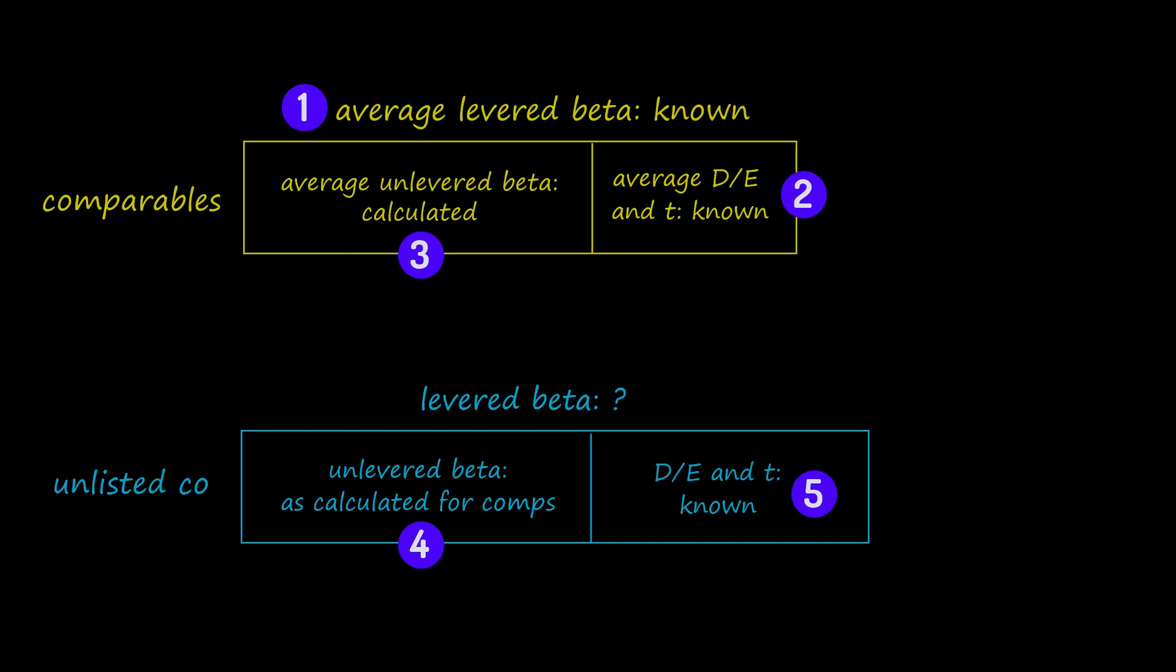The result is an estimate of the full beta for the unlisted company, suitable for use in a CAPM calculation of its cost of equity.